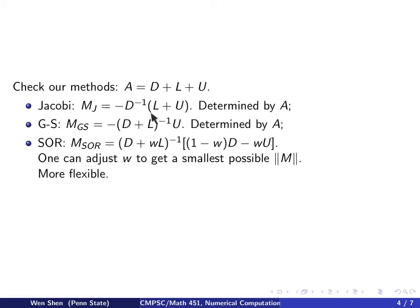For the Jacobi matrix, we have this expression, and we see that it's totally determined by A. For Gauss-Seidel, the coefficient matrix is also determined by A. And SOR, the coefficient matrix takes this form, where there is a parameter w here that allows us some flexibility. We could adjust it to get a smaller norm for this matrix M.